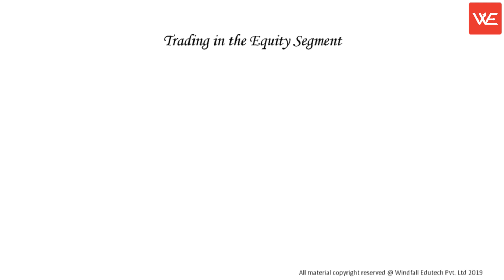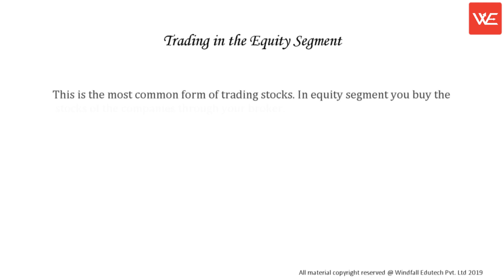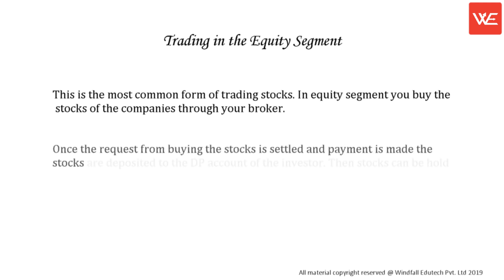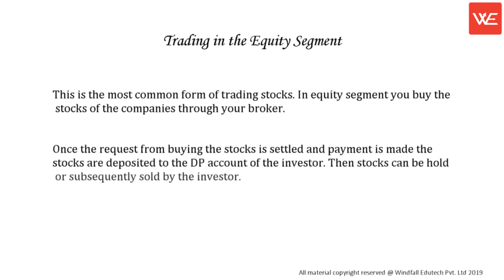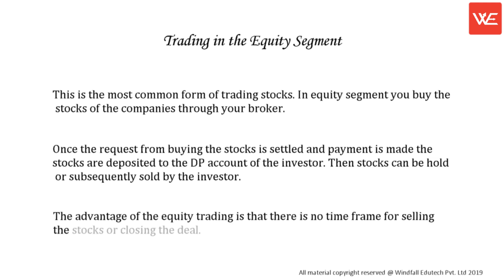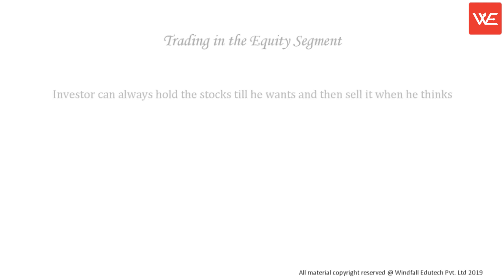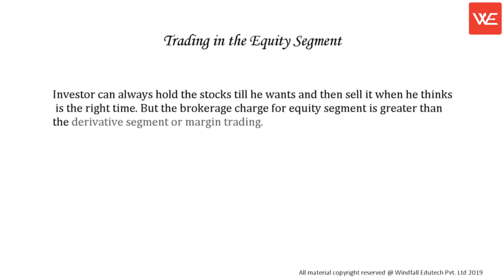Trading in the equity segment is the most common form of trading stocks. In the equity segment, you buy the stocks of companies through your broker. Once the request for buying stocks is settled and payment is made, the stocks are deposited to the DP account of the investor. Then stocks can be held or subsequently sold by the investor. The advantage of equity trading is that there is no time frame for selling the stocks or closing the deal.